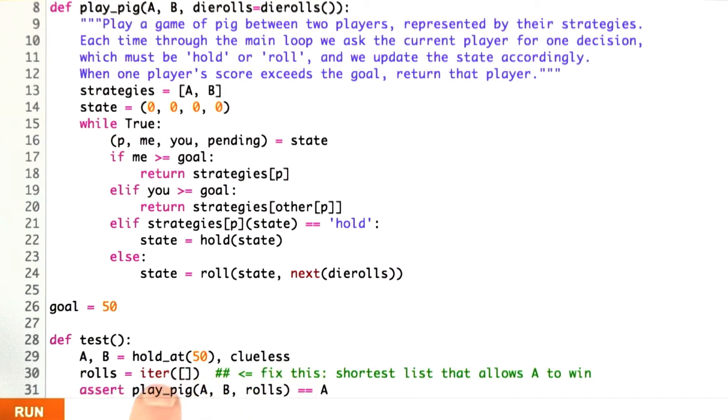And roles is going to be an iterator of some list of numbers, maybe 1, 2, 3, or whatever you want. But I want you to write in there the list which is the shortest possible list, or one of the shortest possible lists that allows A to win.